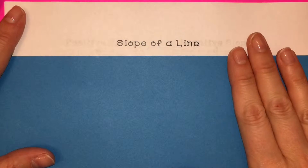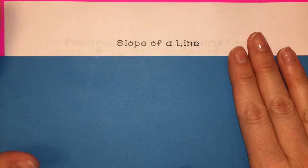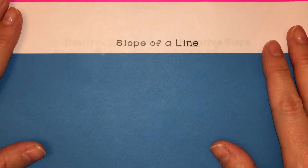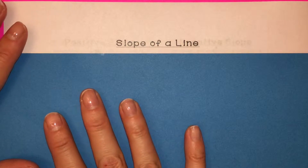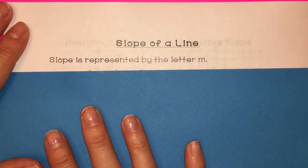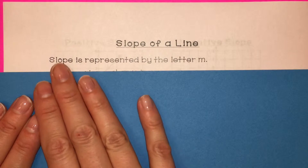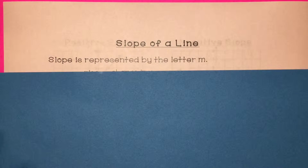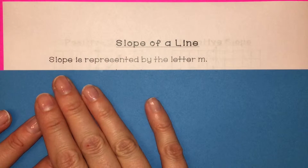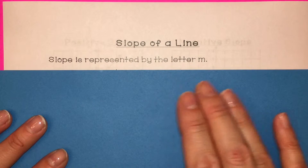In this video we're going to discuss slope of a line. Slope of a line just represents how steep a line is. You can think of a hill — the slope of the hill is how steep the hill is, and just think of a hill as a line. In math, whenever we talk about slope, we represent it by a variable. Slope is always represented by the letter M.